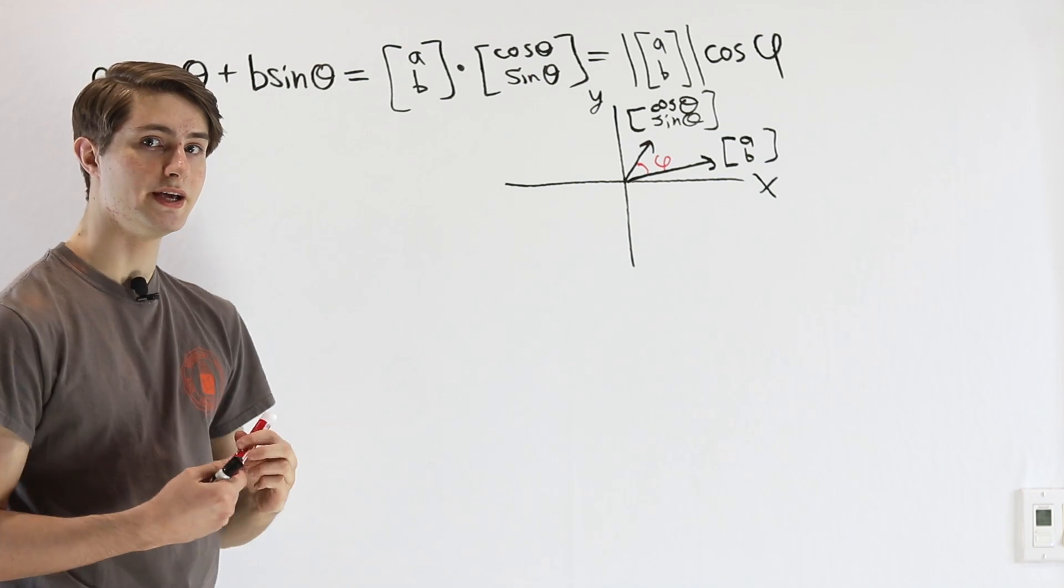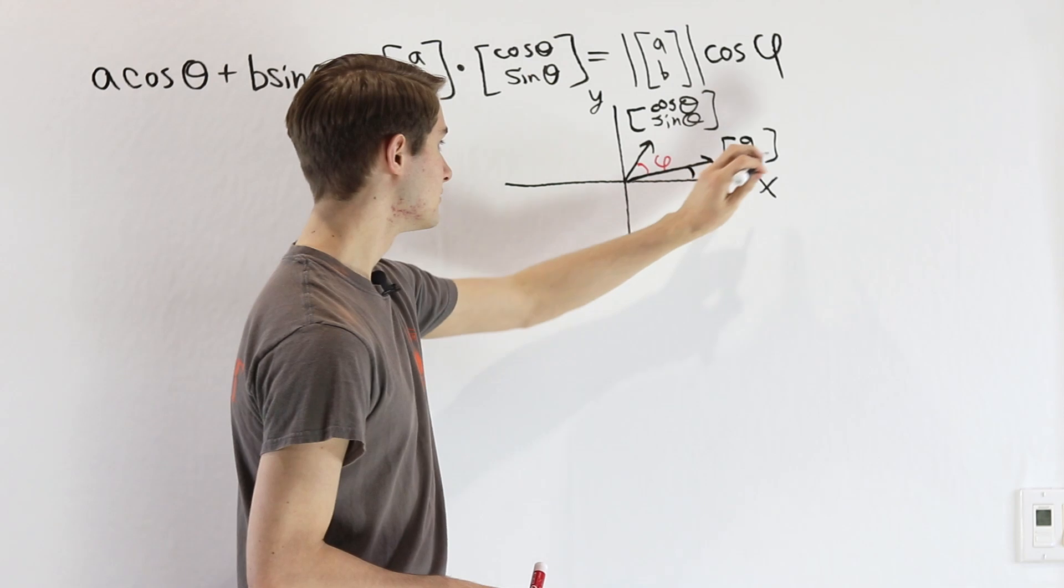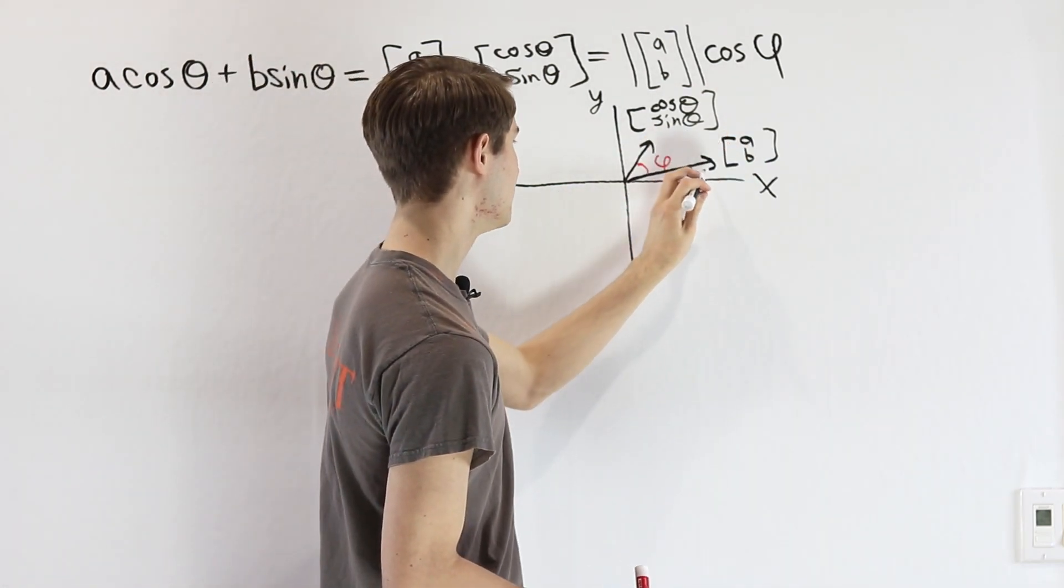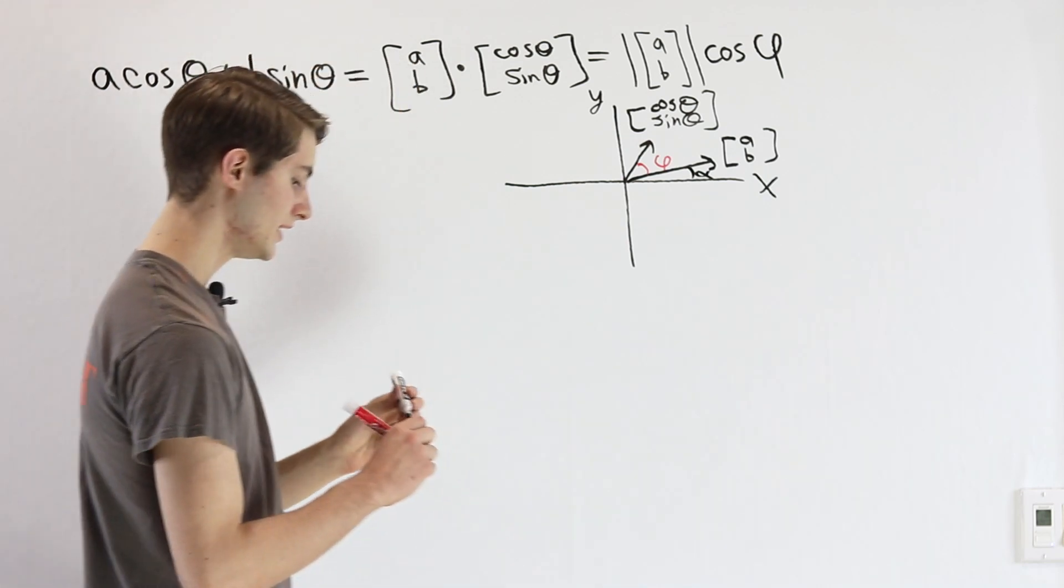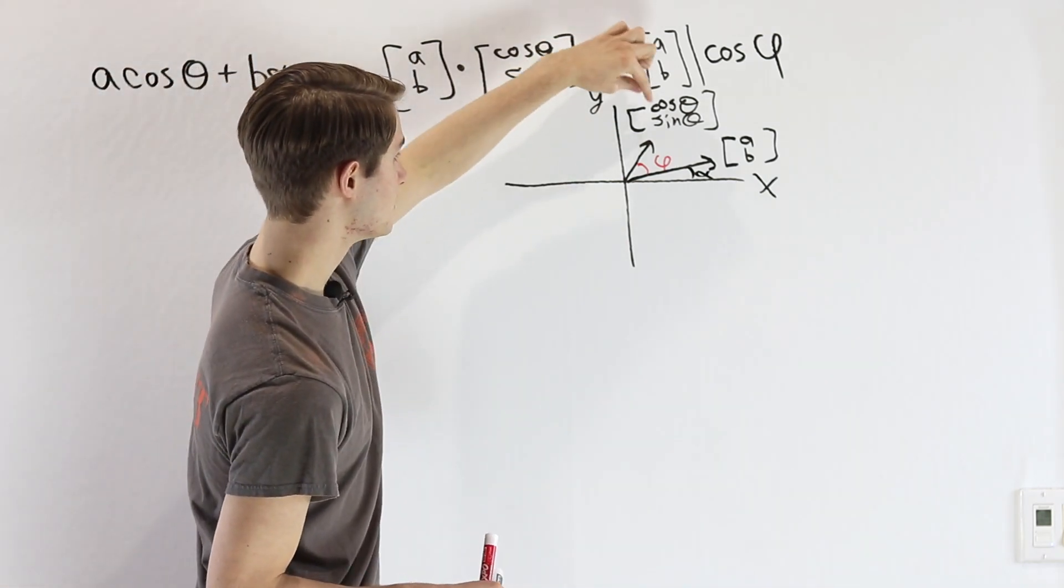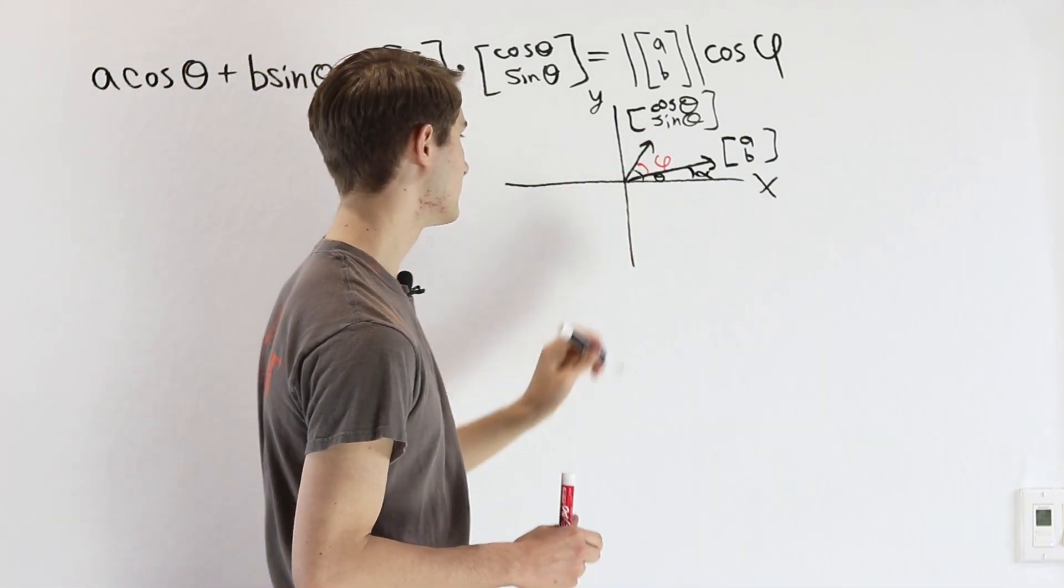There are two other angles that we already know. One is the angle from the vector [A, B] off the x-axis, and we can call that α. And the second one is pretty obvious. The angle of this vector [cos θ, sin θ], well that's just going to be the value θ.